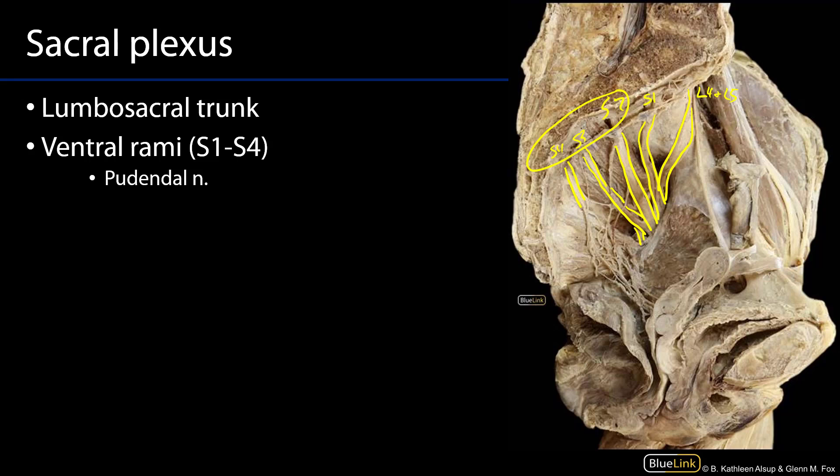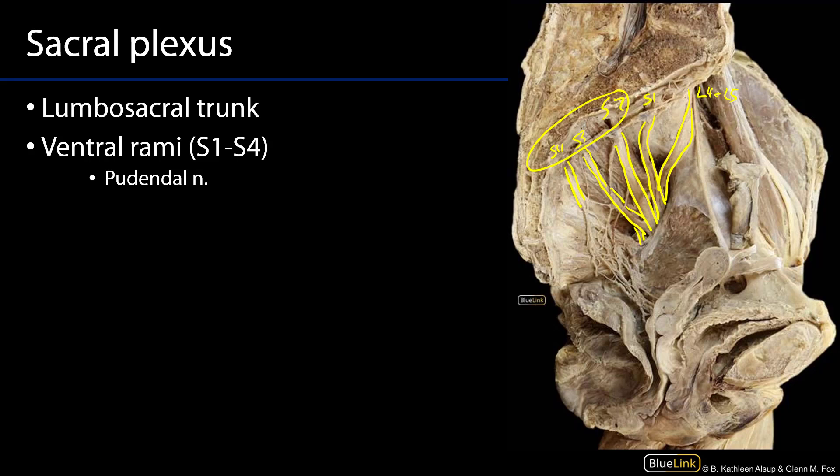The pudendal nerve exits the pelvis through the greater sciatic foramen, wraps around the ischial spine, and conducts itself through the lesser sciatic foramen as it travels into the pudendal canal, or Alcock's canal.